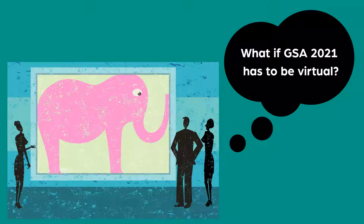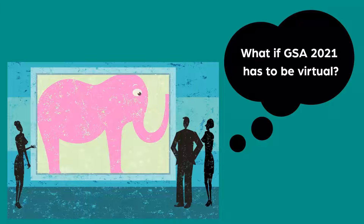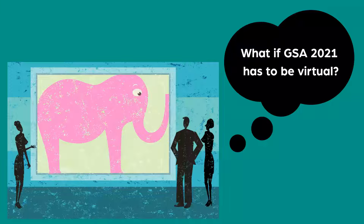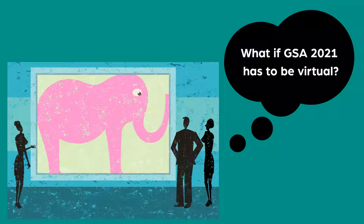Now, let's talk about the elephant in every room this year — what if we have to go virtual? What if the 2021 summer program can't take place in person due to COVID-19? There are many unknowns about the coming year, but nothing is more important to GSA than the safety of our students, staff, and faculty. We don't yet know whether 2021 will be in person, fully virtual, or some mix — but we have a very good foundation for success either way.